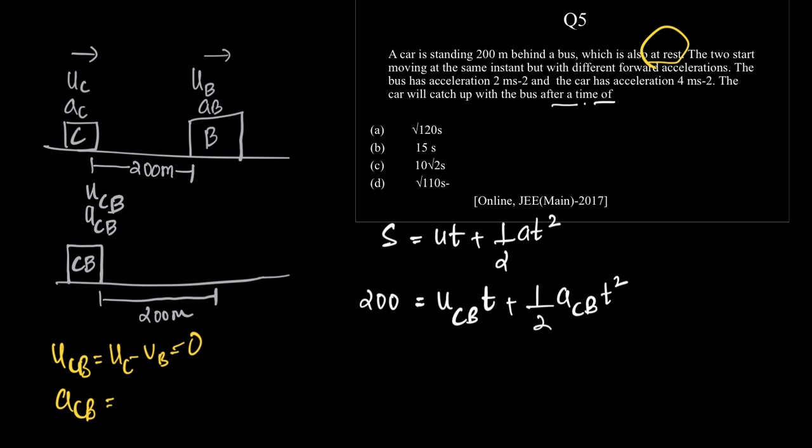What is acb? acb is acceleration of car minus acceleration of bus. Acceleration of car is given to be 4, bus is given to be 2. So it is 4 minus 2 equal to 2.